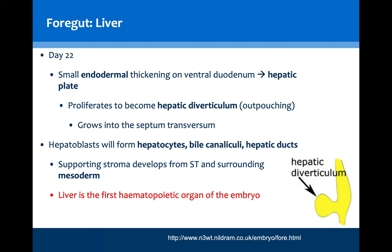The supporting stroma of the liver develops from the septum transversum and surrounding mesoderm. Blood begins to circulate around day 24, coinciding with the formation of the liver as it generates the first blood cells — the erythroblasts for the fetus. As such, the liver is actually the first hematopoietic organ of the embryo, and not the bone marrow.